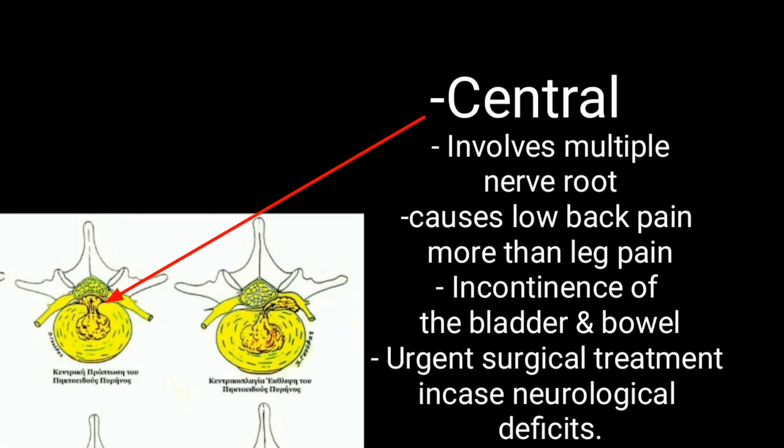Another type is central herniation, which involves multiple nerve roots. It causes low back pain more than leg pain, and may cause incontinence of the bladder and bowel. Urgent surgical treatment is required in cases of neurological deficit.